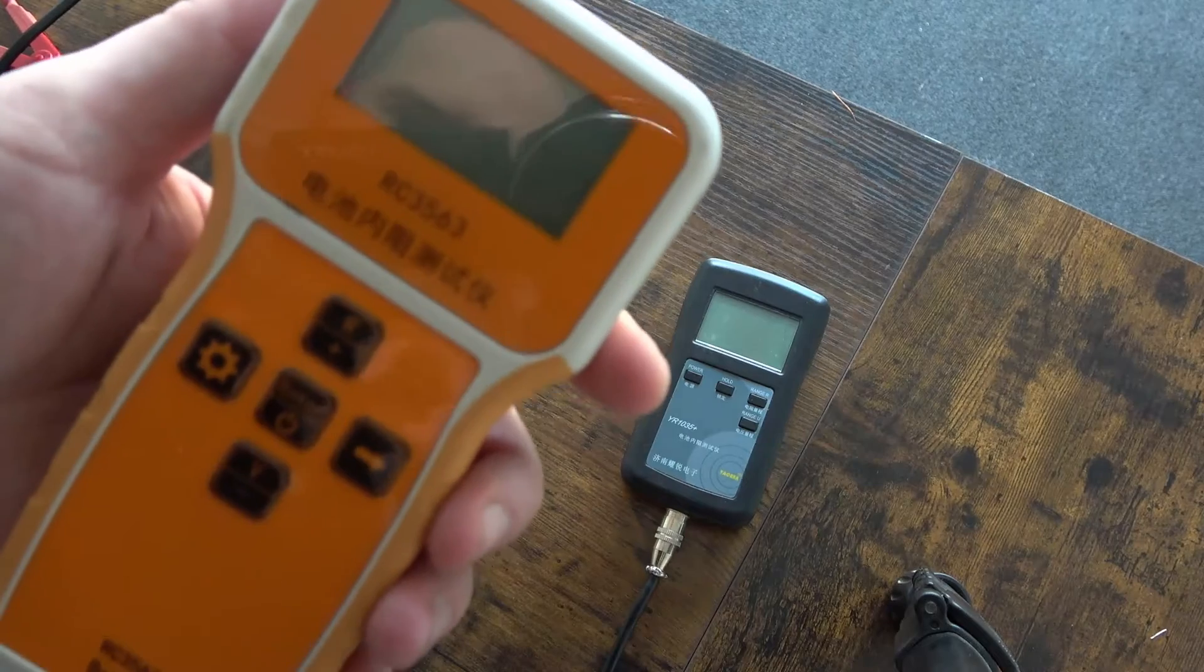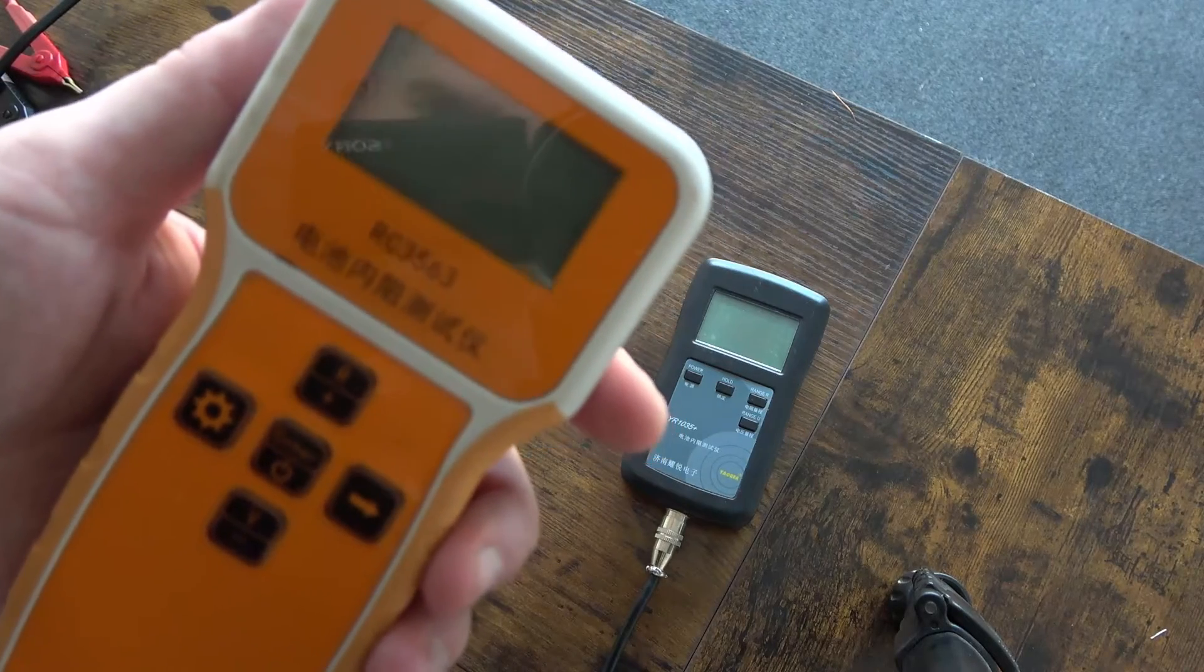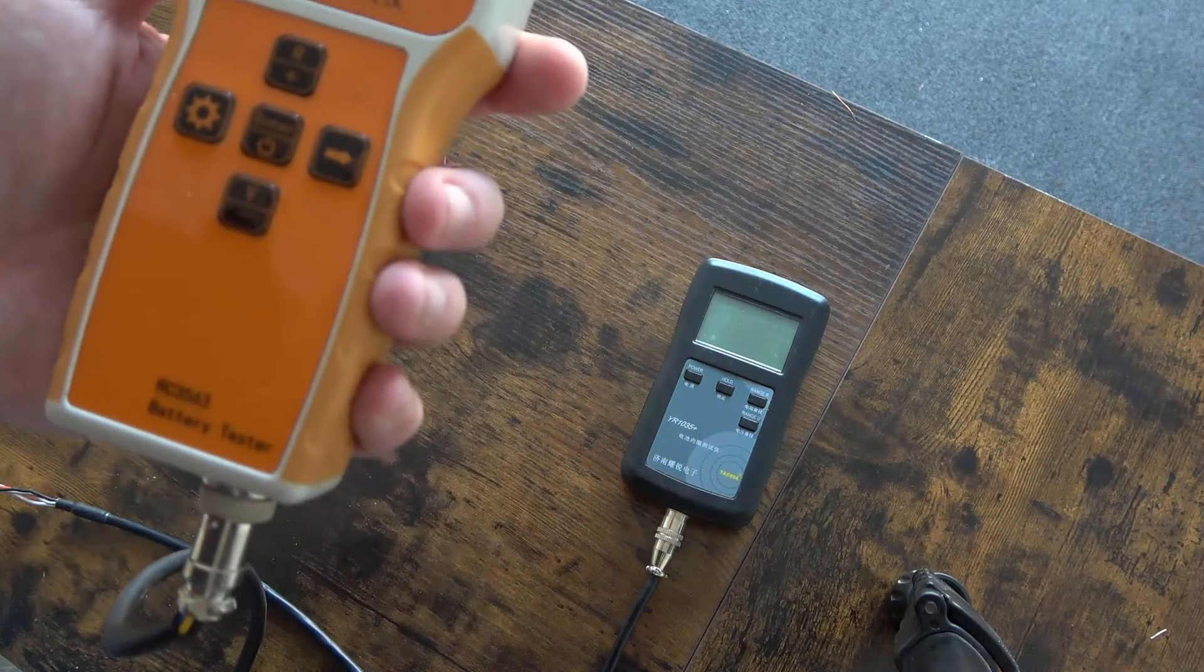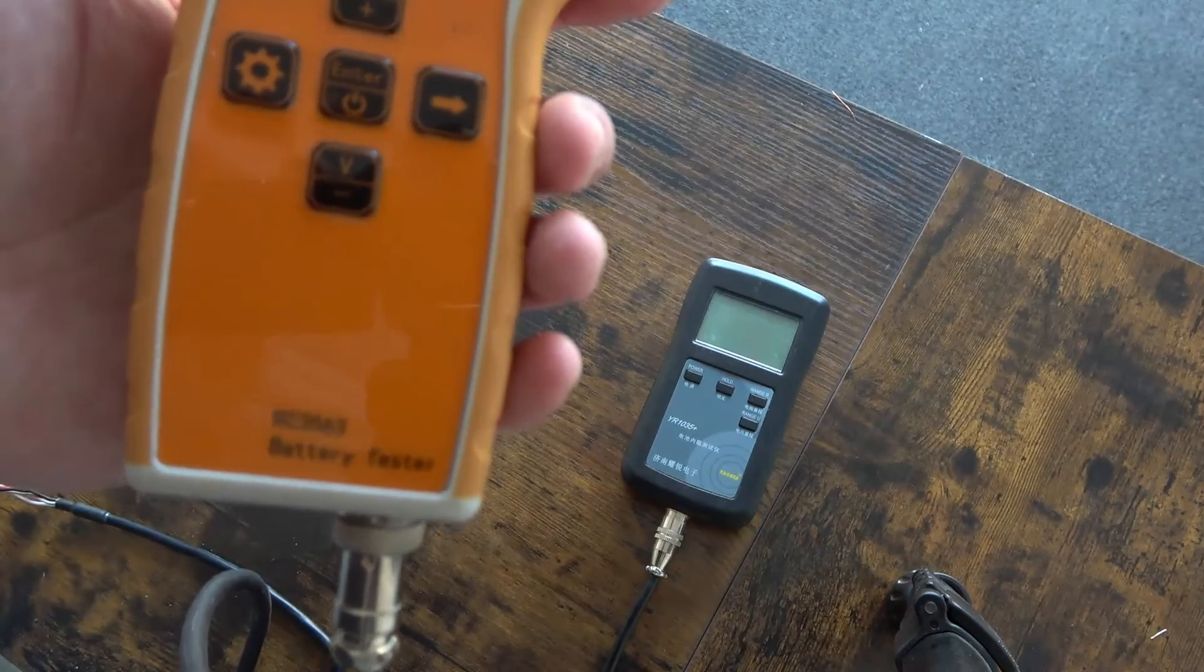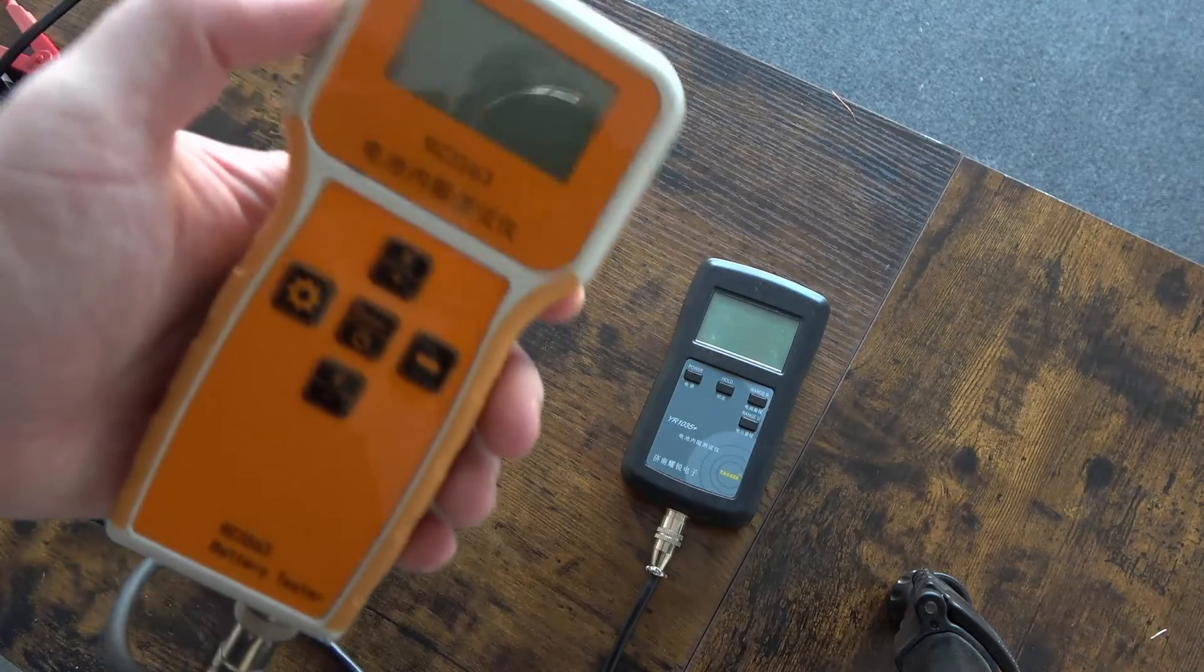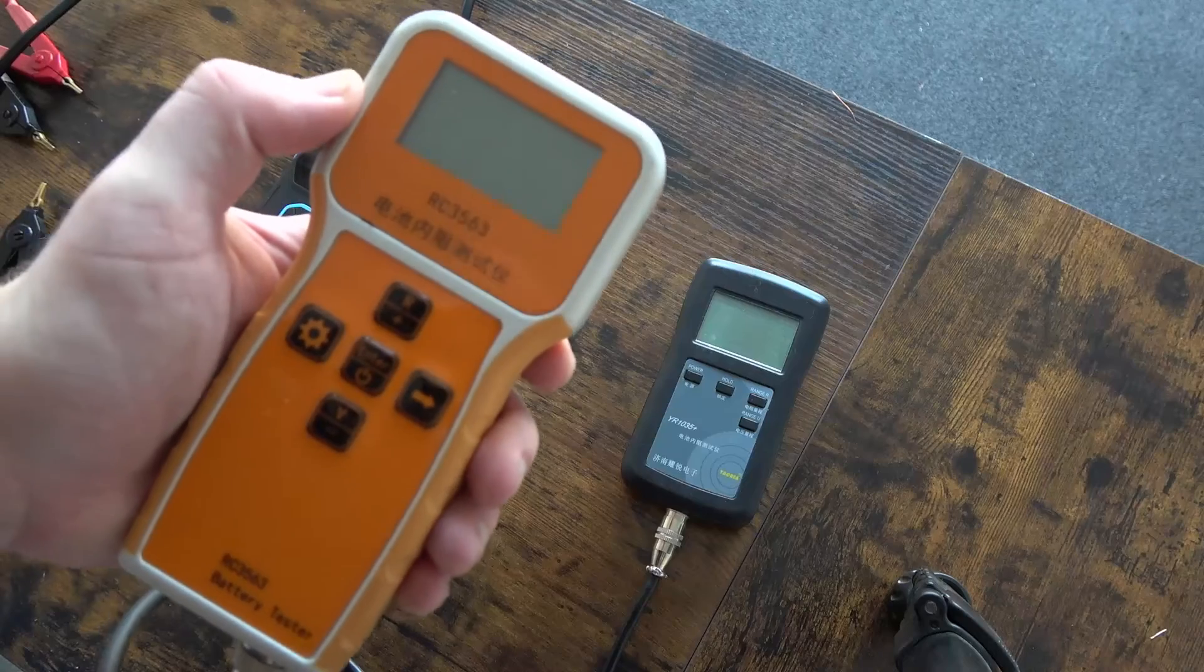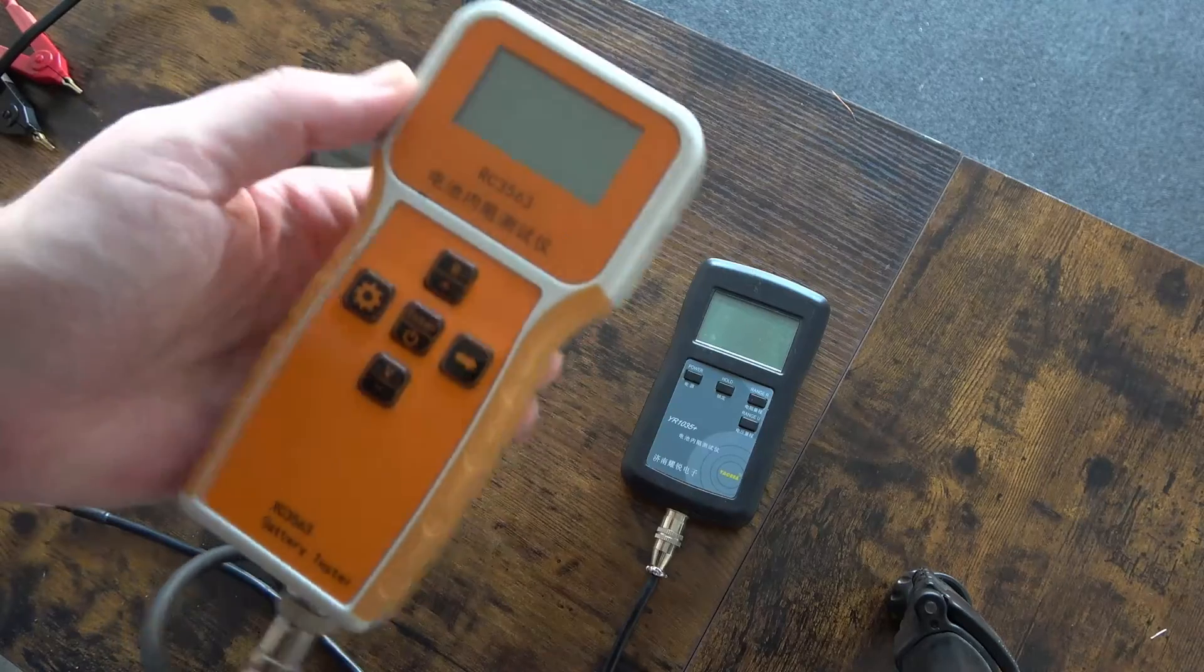Here's another very common one, the RC3563 battery tester. You have to be careful - there's one that looks just like this that's a DC meter and it'll kill it if you hook it up to a battery.